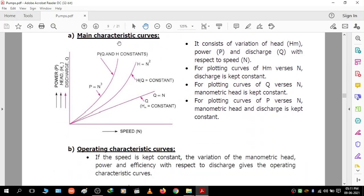The main characteristics curve is a graph of speed against power, head, and discharge. It consists of the variation of head, power, and discharge with respect to speed. For plotting curves of manometric head versus speed, discharge is kept constant. For plotting curves of discharge versus speed, manometric head is kept constant. For plotting curves of power versus speed, manometric head and discharge are kept constant.